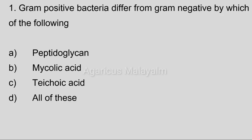First question: Gram positive bacteria differ from gram negative bacteria by which of the following? Option A: peptidoglycan. Option B: mycolic acid. Option C: teichoic acid. Option D: all of these.